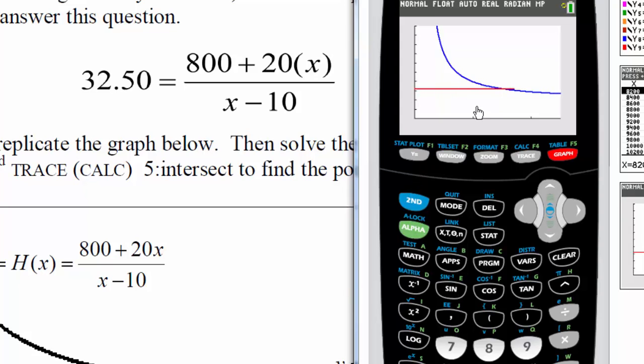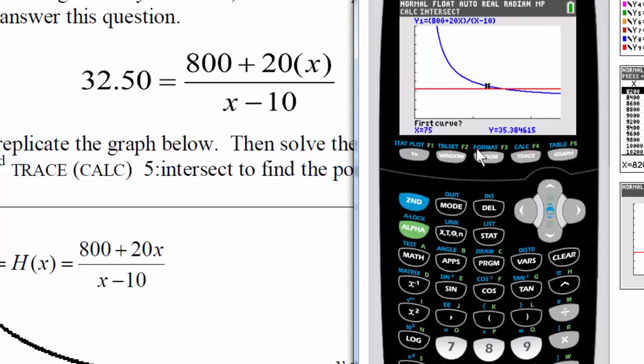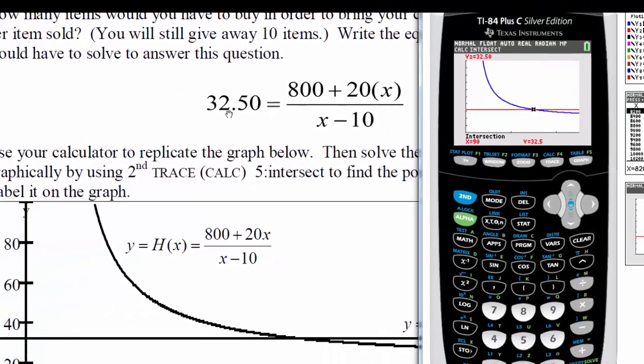And now the intersection, if I press second, and above trace says calc, so I'll press the trace key. Number five for intersection. And then my first curve, that's fine. My second curve, that looks good. And then my guess, it's somewhere around here. So I'll press enter. So it looks like we have to basically buy and sell 90 of these items. We're going to buy 90, give away 10, so we actually sell 80 of them to bring our average cost down to $32.50.